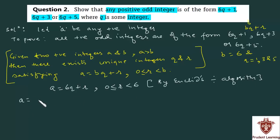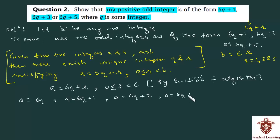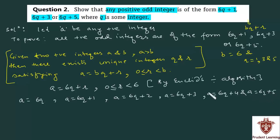Now a can take the following values: a is equal to 6q when r is equal to 0; a is equal to 6q plus 1 when r is equal to 1; a is equal to 6q plus 2 when r is equal to 2; a is equal to 6q plus 3 when r is equal to 3; a is equal to 6q plus 4 when r is equal to 4; and a is equal to 6q plus 5 when r is equal to 5.